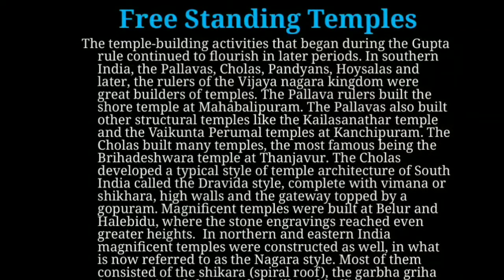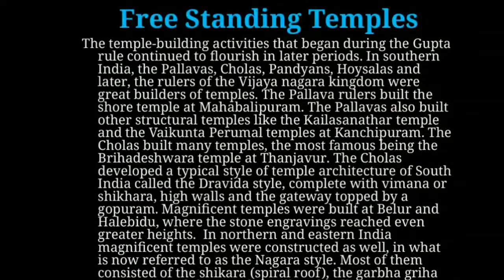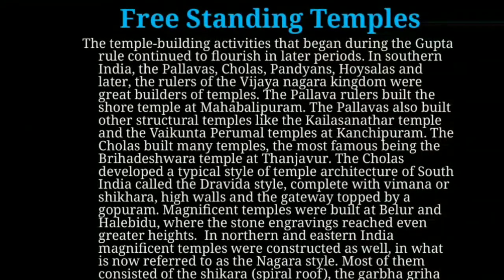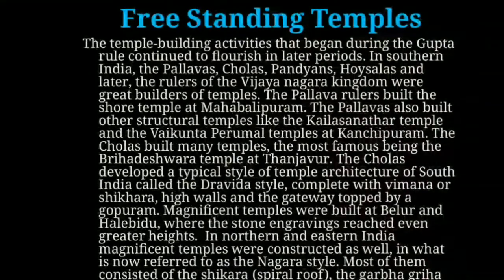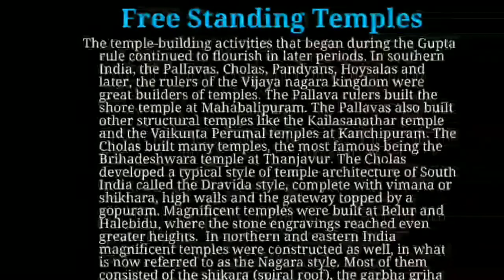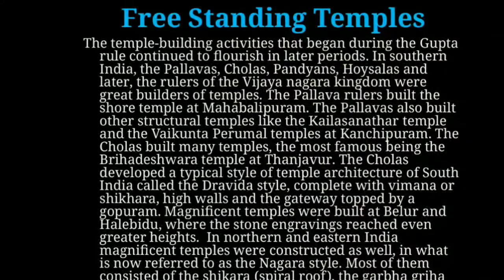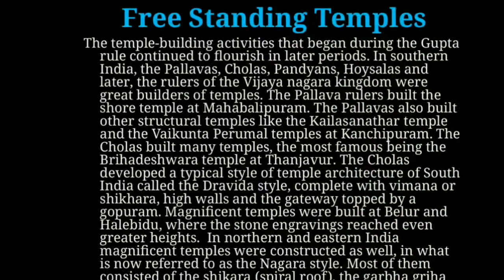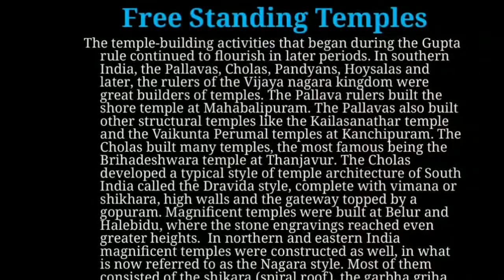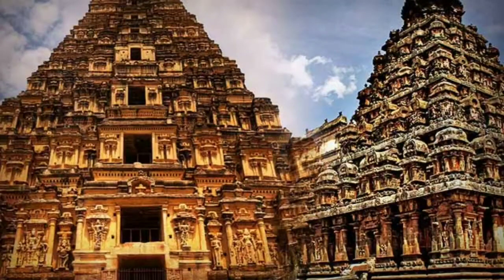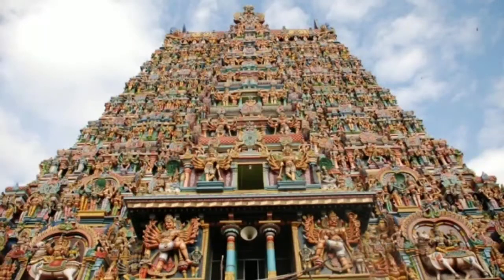Temple-building activities that began during the Gupta rule continued to flourish in later periods. In southern India, the Pallavas, Cholas, Pandyas, Hoysalas, and later the rulers of the Vijayanagara kingdom were great builders of temples. The Pallava rulers built shore temples at Mahabalipuram and structural temples like the Kailashanatha and Vaikunta Perumal temples at Kanchipuram. The Cholas built many temples, the most famous being the Brihadishwara temple at Thanjavur. The Cholas developed the Dravida style of temple architecture, complete with Vimana or Shikhara. Magnificent temples were also built at Belur and Halebidu.